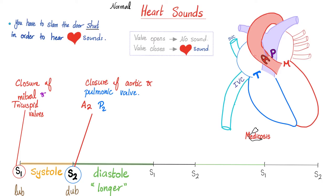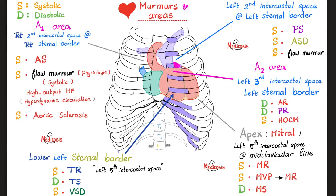Pulmonic regurgitation is failure of closure of the pulmonic valve during diastole — therefore it is a diastolic murmur. It is similar to the murmur of aortic regurgitation: a diastolic decrescendo murmur. We hear it usually at the left third intercostal space near the left sternal border — slightly above or below, but in this area — because this area lies beneath the pulmonary valve, and this is where the backflow of blood is heard.